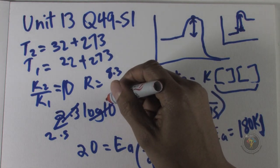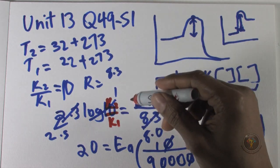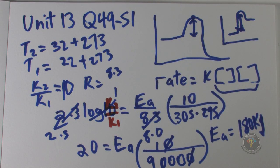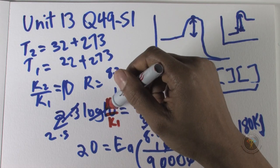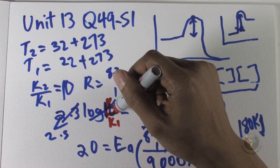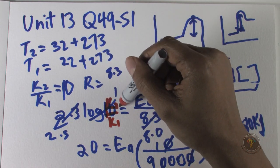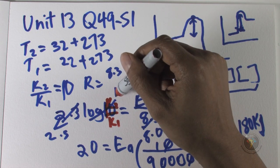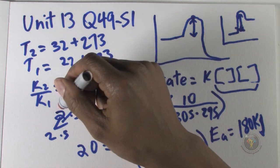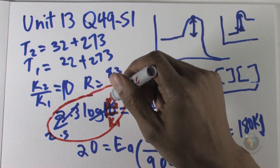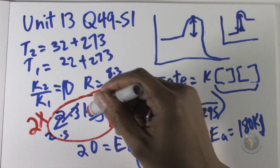We've got 2.3 log k2 over k1. Instead of it being 10 times, it's 100 times. What changed on the left side of the equation? If this is 100 times instead of being log 10 which is 1, it's log 100 which is 2. So all we did by making it 100 times, we ended up multiplying the left side of the equation by 2.